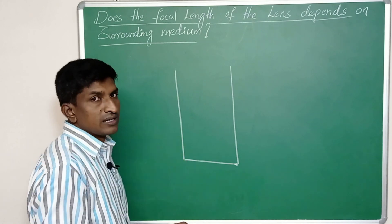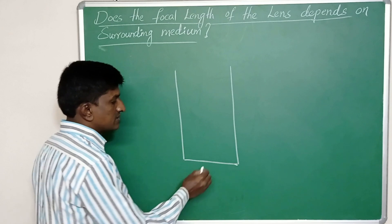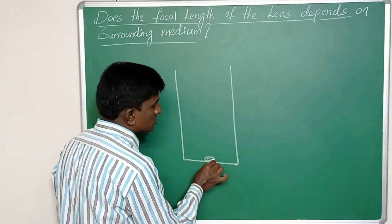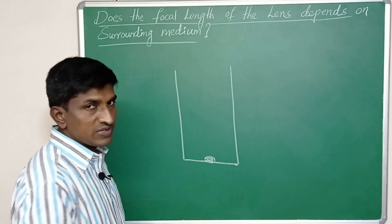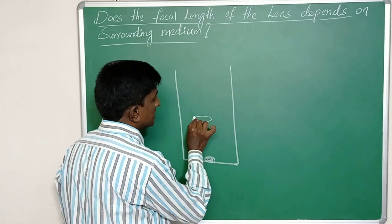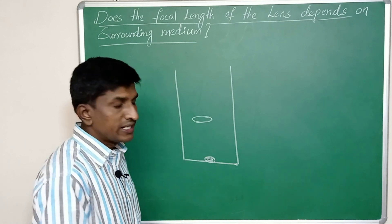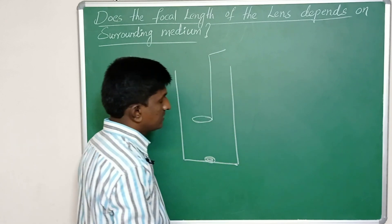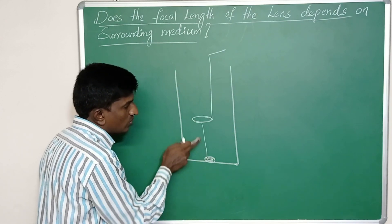The height of the cylindrical vessel is greater than the focal length of the lens we are using. Take a black stone and keep it at the bottom of the vessel. Now take the convex lens — generally we call it a magnifying lens — and hold it with a lens holder.